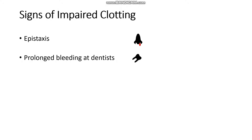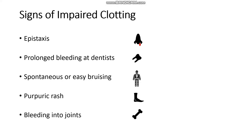If we are not able to clot properly, we may have symptoms such as nosebleeds, bleeding excessively at the dentist or during dental extractions, unexplained or spontaneous bruising occurring all over our body, purpuric rashes occurring mainly over the legs and behind the buttocks, and bleeding into the joints. In this video we're going to take a much greater dive into each specific condition and look at exactly how they lead to issues with clotting.